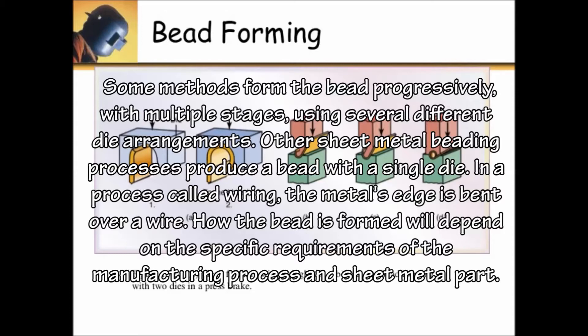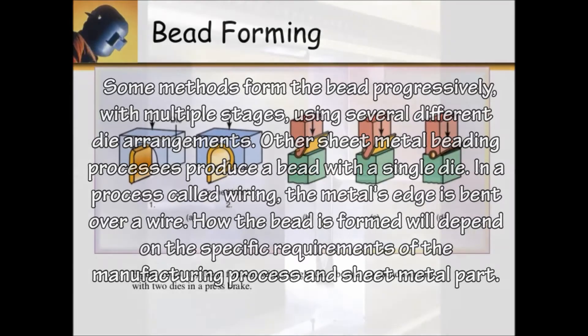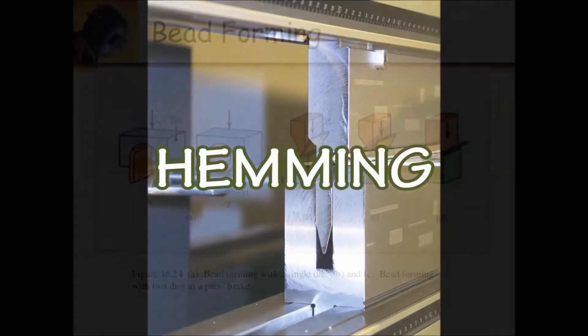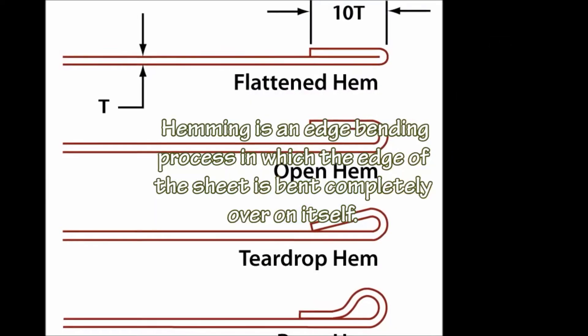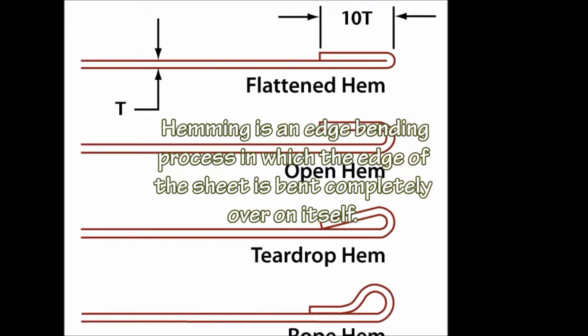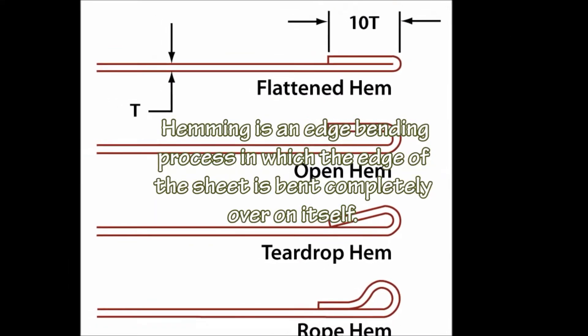Hemming is an edge bending process in which the edge of the sheet is bent completely over on itself.